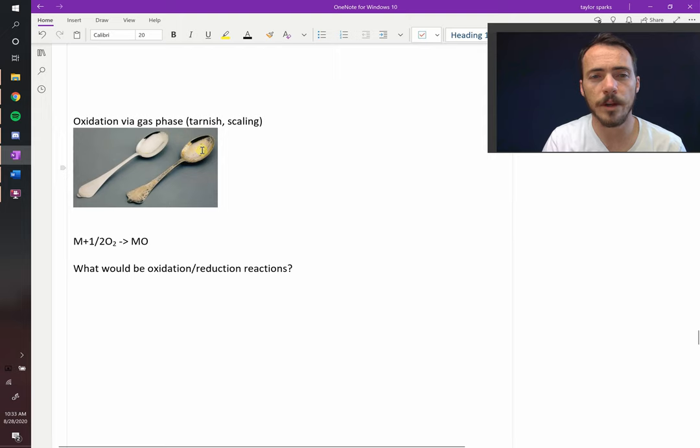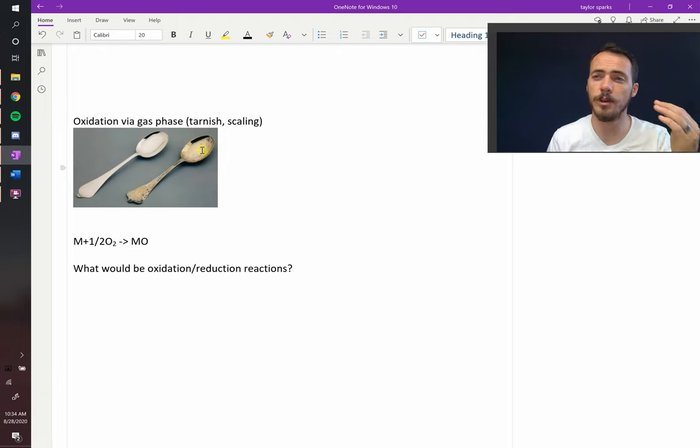Here we've got a silver spoon forming a silver oxide tarnish, and this will happen regardless of whether it's in water or not. So if this is an oxidation reaction, then there must be a reduction reaction. You can't have just one. Redox reactions always have to have a reduction and oxidation. Something to give up electrons and something that's going to accept them.